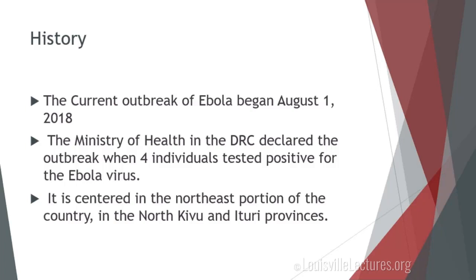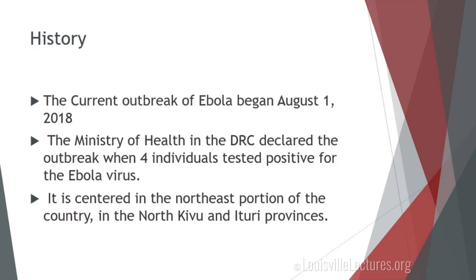We are currently in the midst of an outbreak of Ebola. The current outbreak began August 1st of 2018. The Ministry of Health in the Democratic Republic of the Congo declared an outbreak when four individuals tested positive for the Ebola virus.